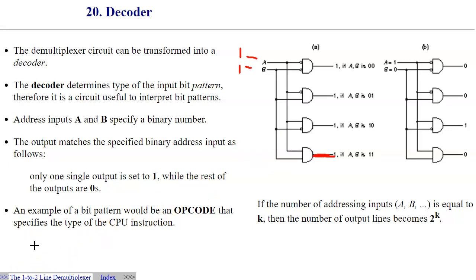An example of a bit pattern would be an opcode, operation code, that specifies the type of CPU instruction. Each CPU instruction has to be loaded from memory into the CPU, and the first operation that needs to take place is the operation code, which uniquely identifies that instruction, has to be decoded.